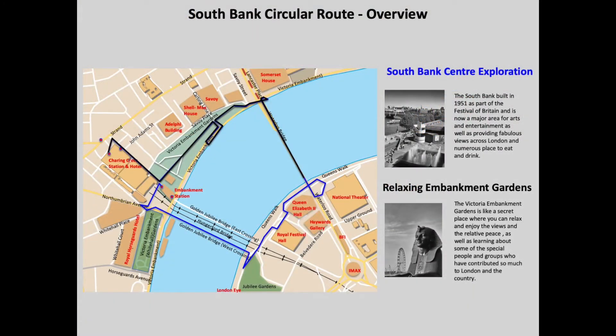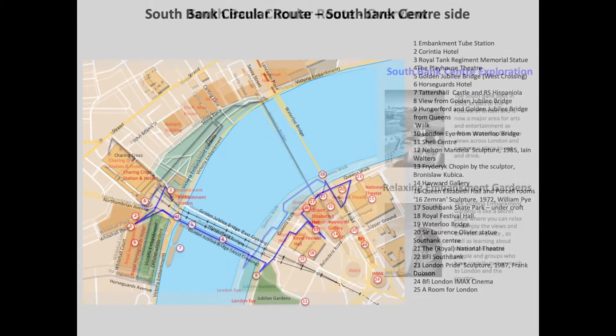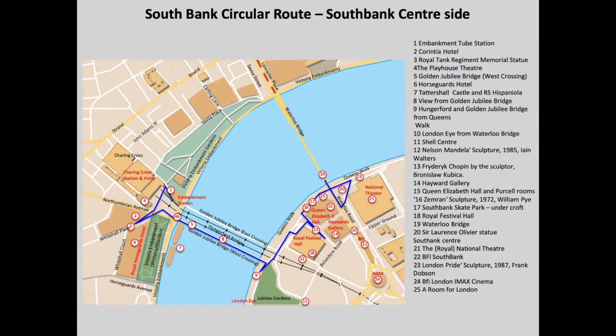Looking at the South Bank circular route, you can see it in two parts: the blue section is what we're going to cover now, and the black section when we get to the end of Waterloo Bridge is the reverse section going through Embankment Gardens. There's a huge amount of entertainment sites and things to see along this side of the river.